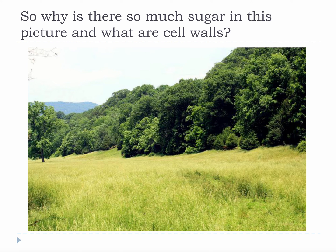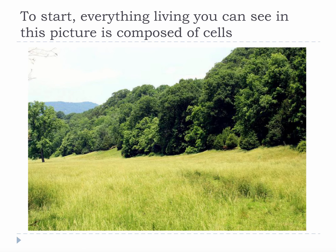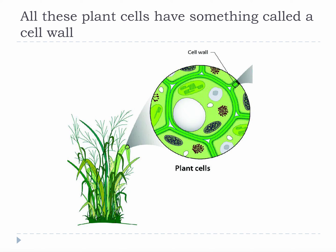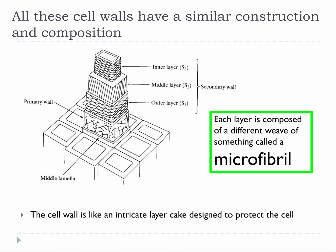So why is there so much sugar in this picture, and what are cell walls? Well, to start, everything living you can see in this picture is composed of cells. Going a level deeper, all plants are composed of cells and all plant cells contain something called a cell wall. The cell wall is important because it offers structural support and it helps the cell defend itself. As we discussed when we looked at the sugar polymers, all of these cell walls, regardless of the plant source, have a pretty similar construction and composition.